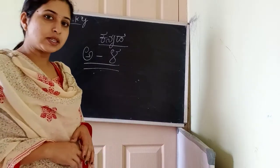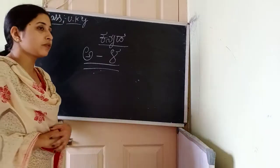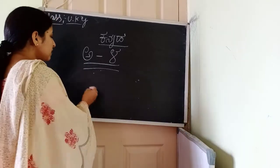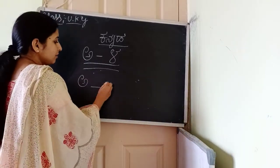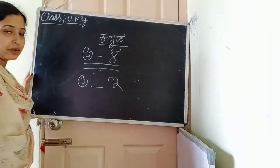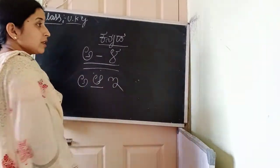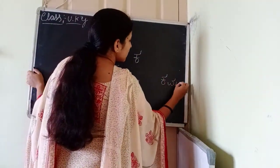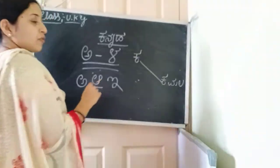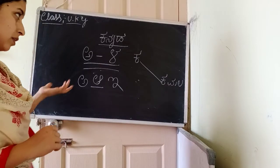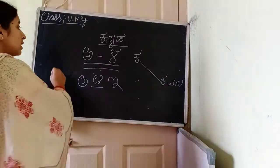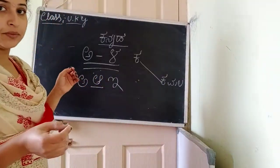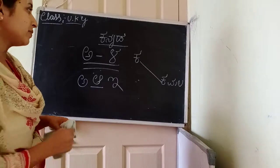For the Kannada subject, the worksheet will be for 50 marks. You may get missing letter questions, like which one is the middle letter. Then match the following — like words starting with the letter 'ka'. Then fill in the blanks, like: Kannada swara vadu — how many swaravadus are there in Kannada? The answer is 30. This type of question you may get in the Kannada subject.